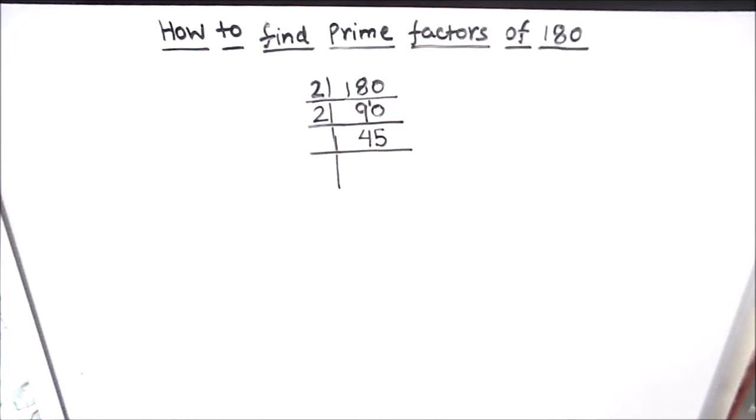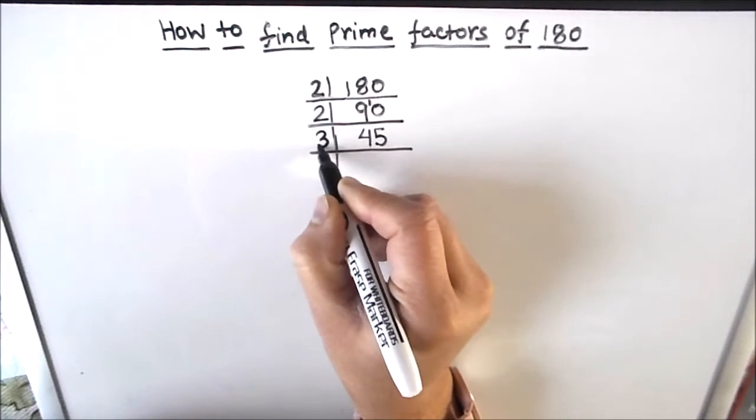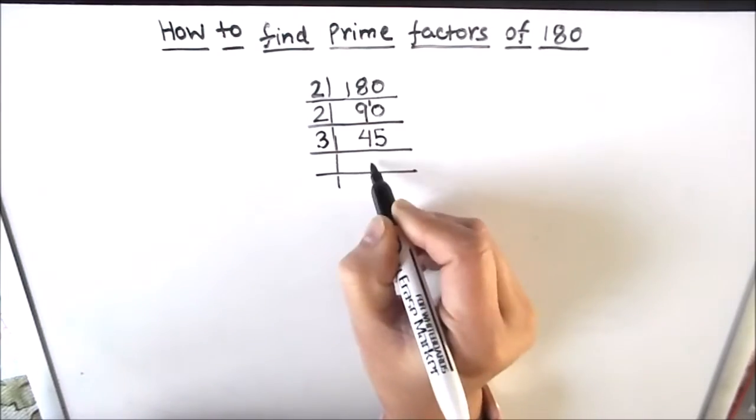Now 45 is an odd number, let's divide it by next prime number 3. 3 times 1 is 3, 1 is remainder, this becomes 15.